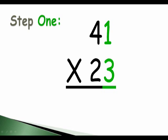In step one, the numbers that we are going to multiply are green. We are going to multiply 3 by 1. 3 times 1 equals 3. We will write the 3 under the green 3.